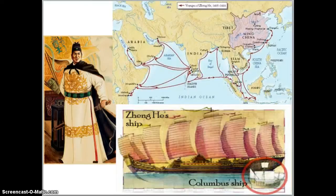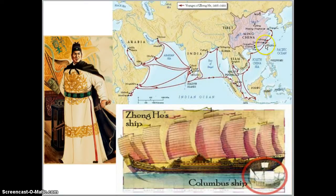Here is a picture of Zheng He, and up here is a map of Zheng He's travels — all these red lines show you where he went throughout this area of the world. It is even thought that he made it to the Americas before Columbus, but we don't have accurate information on that.